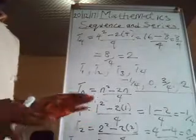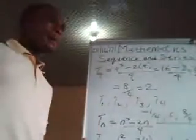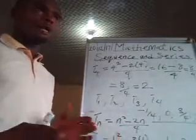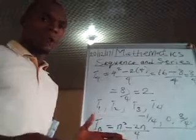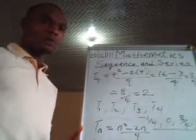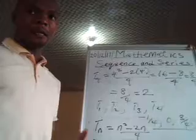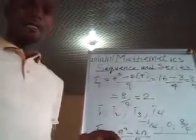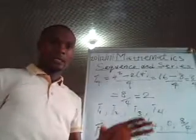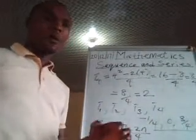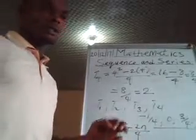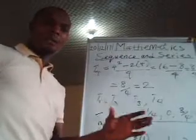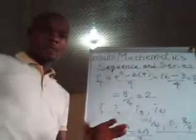The difference between a sequence and a series: when numbers are arranged and they have a defined relationship or pattern that exists between the terms, we call it a sequence. It can have a common difference or common ratio. But when we talk about a series, a series is the addition of a sequence. So if the sequence has terms t1, t2, t3, t4, the series will be t1 plus t2 plus t3 plus t4.